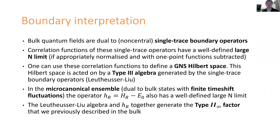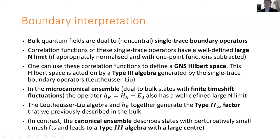The fact that we worked in the micro-canonical ensemble was important. The canonical ensemble — the more usual large N limit — corresponds to states where the time shift between the two sides is perturbatively small, of order one over N. Things like the thermofield double state have perturbatively small time shifts between the two boundaries in the large N limit. This leads instead to a type three algebra with a large center in the large N limit. But once you include perturbative corrections, it becomes more like the micro-canonical type two algebra. From a bulk point of view, it's just about whether we have finite fluctuations of the time shift or not.